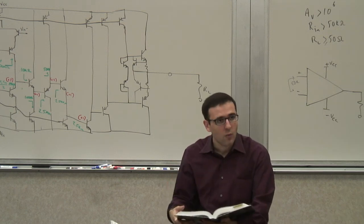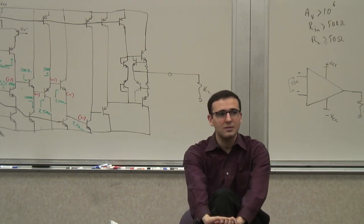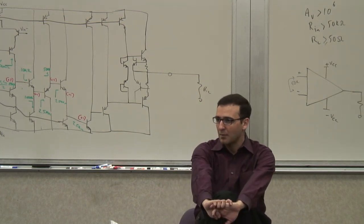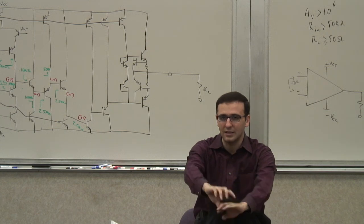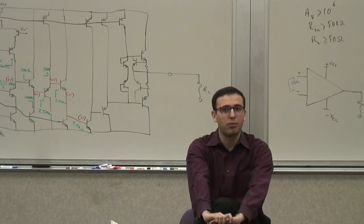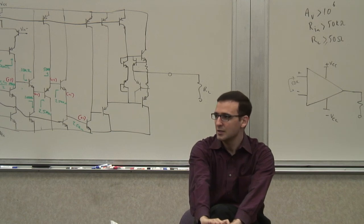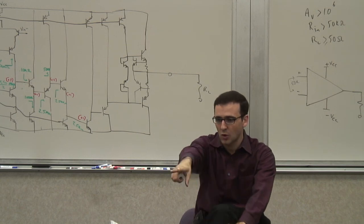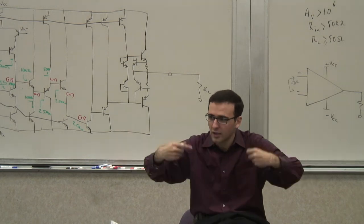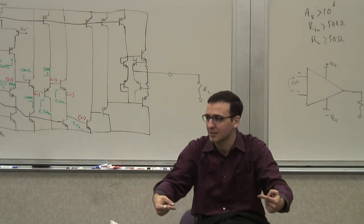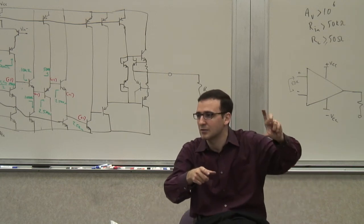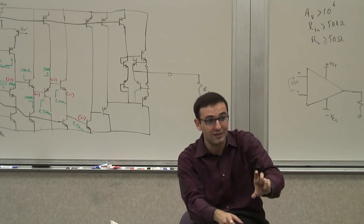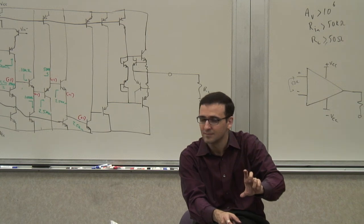One last thing before we go today. What are the problems we have in this op-amp? In addition to the input offset voltage, you may also have an input offset current — the two input currents may not be the same. You also need an input bias current. In this op-amp, there's the base current of those two transistors that need to be provided. So both inputs actually pull current in — there's a constant DC current that needs to be maintained.